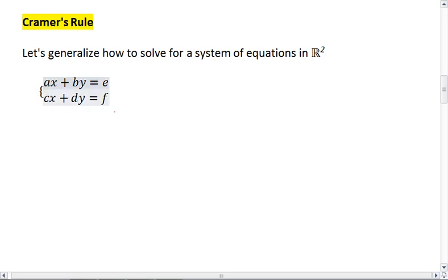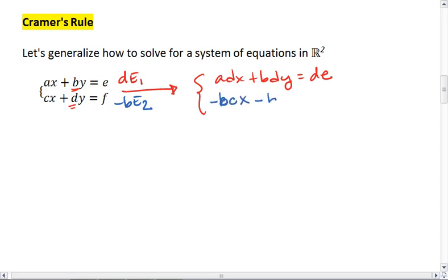Well, let's say that I wanted to solve for x by eliminating this variable y. The way I would do that is to make the coefficients on y the same. So I would take D times equation 1 to give me AD X plus BD Y equals DE. I then would take negative B times equation 2 to give me negative BC X minus BD Y equals negative BF.